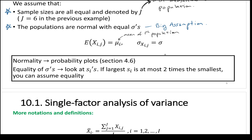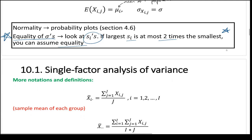To check equality of sigmas before using ANOVA: look at the sample standard deviations s-i. If the largest s-i is at most two times the smallest, you can assume equality of variances. Each population also needs to be normally distributed — you'd check that with probability plots. But the key check is that largest s over smallest s is no more than 2.